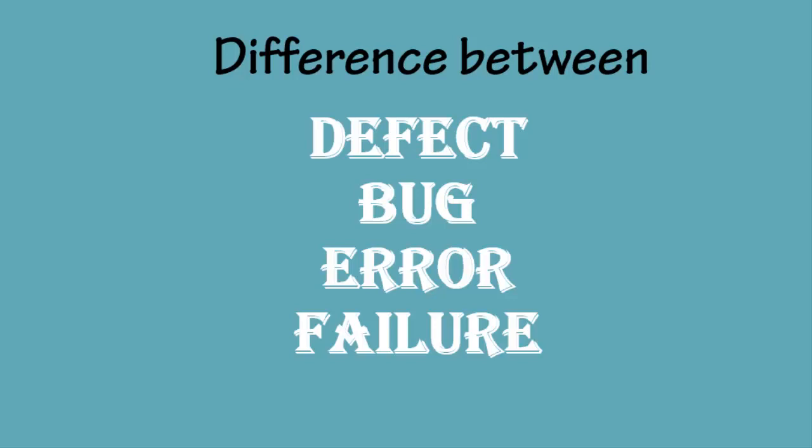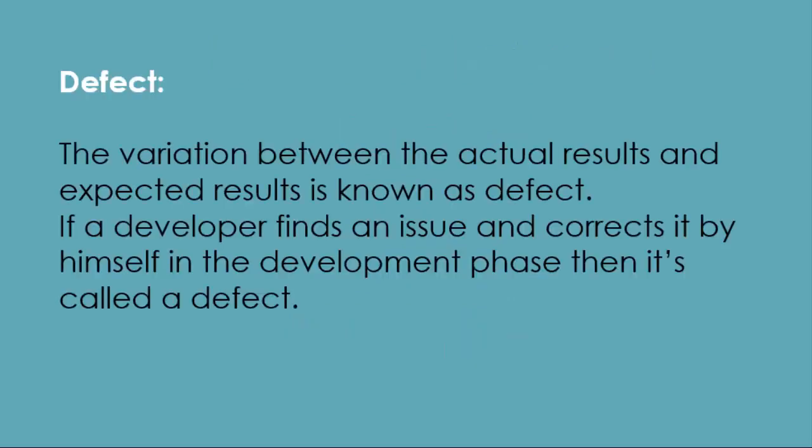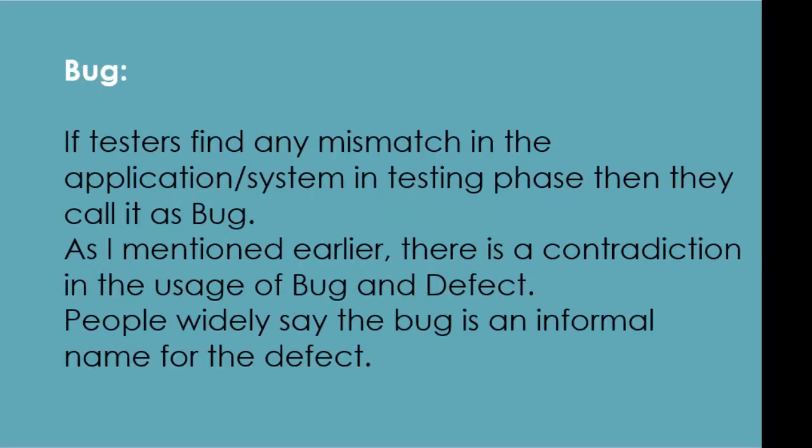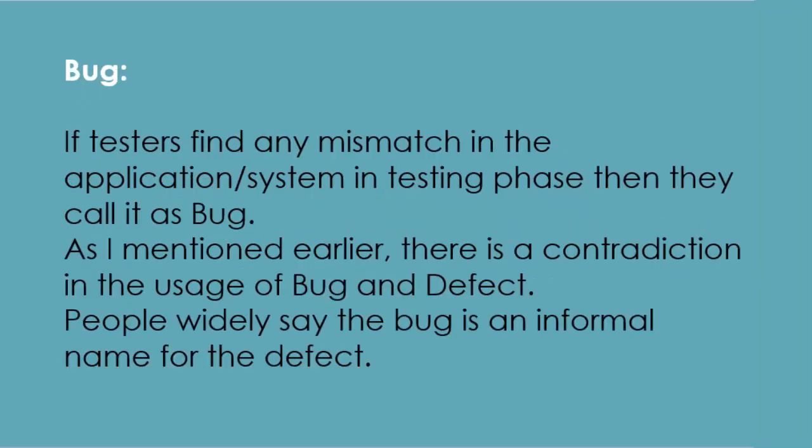There is generally a contradiction in the usage of these terminologies. In the software development lifecycle, we use these terms based on the phase. Both defect and bug are issues in an application, but the phase of SDLC in which it was found makes the overall difference. A defect is the variation between actual results and expected results. If a development team finds an issue and corrects it themselves during the development phase, it is called a defect.